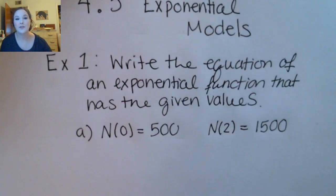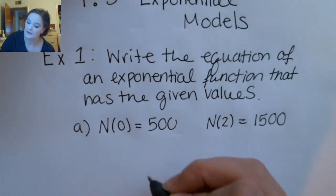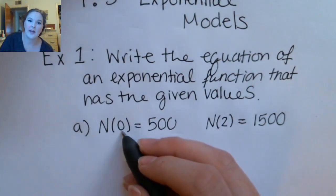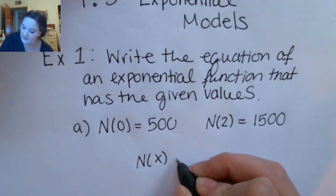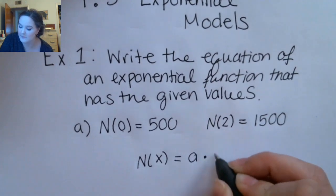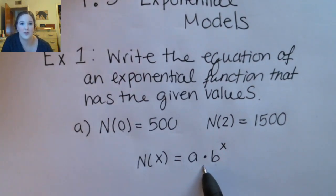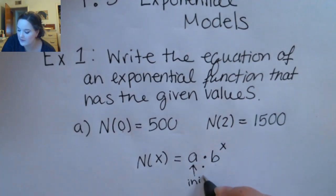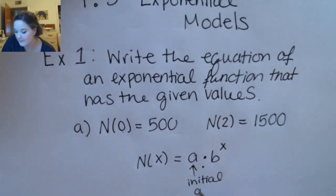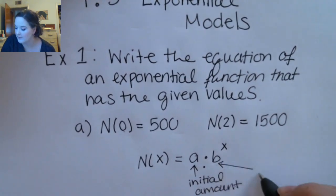The first thing we have to remember is what an exponential function looks like. In this case we're using n, so we'll have n of x equals a times b to the x. This a times b to the x is the general format for an exponential function. Here, a is the initial amount and b is the growth or decay rate.